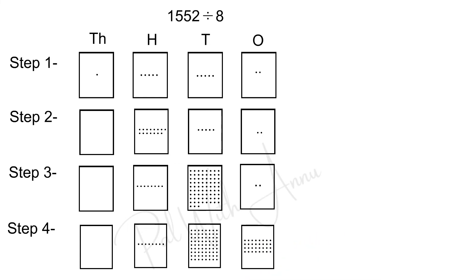there is nothing to divide by 8 in the 1000's box. So, write 0 and there are 8 dots in 100's box. That means, this is divided by 8 in 1's time. I mean, 8 into 1 equals to 8. So, write 1 here.